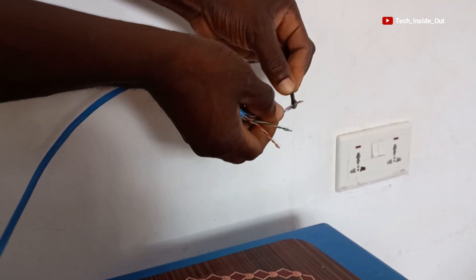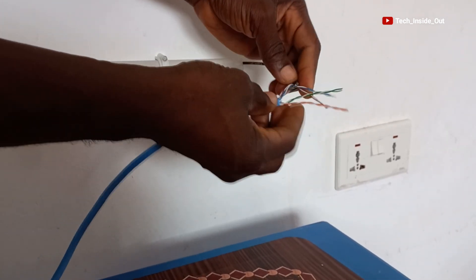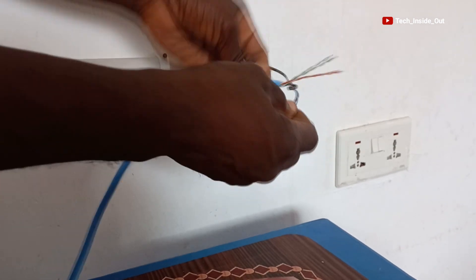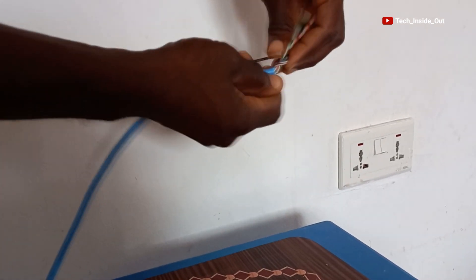We would have to tie the conductors to the fishing tape firmly, so that in the course of drawing the cable through the pipe, it won't remove.